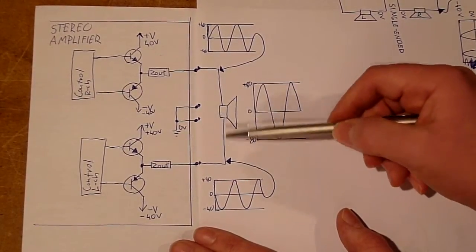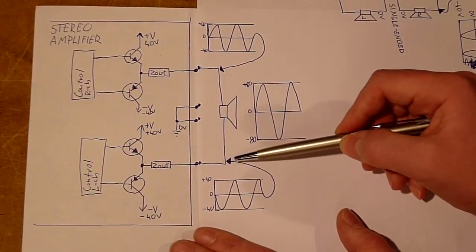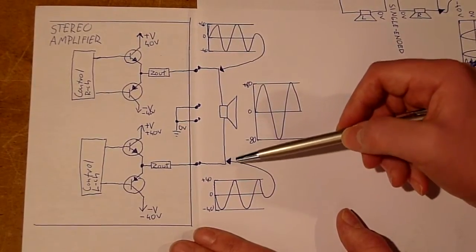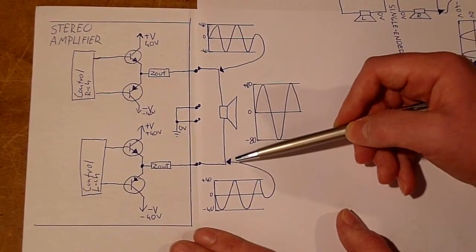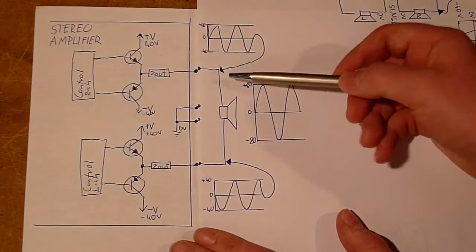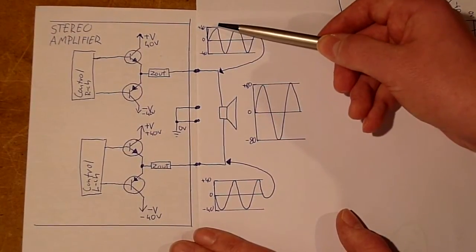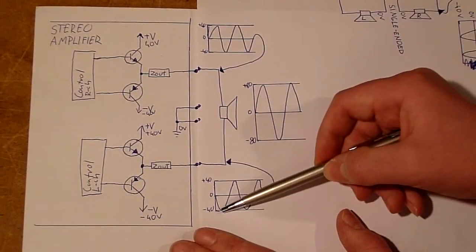And since the speaker has no idea about what's ground, ground to it is non-existent, it only sees the difference in voltage between the two amplifiers. And because this one is putting out plus 40 volts and this one is putting out minus 40 volts,